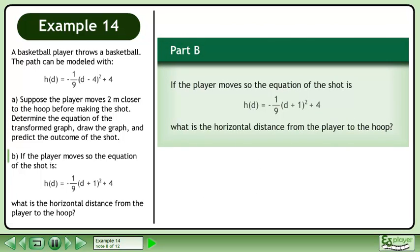In Part B, if the player moves so the equation of the shot is h(d) = -1/9(d + 1)² + 4, what is the horizontal distance from the player to the hoop?